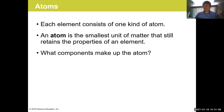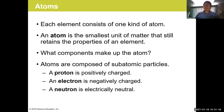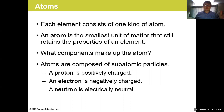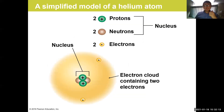Each element consists of one kind of atom, and you can't break that element down into a simpler form. The atom is the smallest unit of matter that still retains the properties of its associated element. Atoms are composed of three subatomic particles: protons, electrons, and neutrons. Protons and neutrons have mass; electrons have essentially zero mass. The atomic mass is determined by the number of protons and neutrons, while the charge is determined by the number of protons and electrons. Protons are positively charged, electrons are negatively charged, and neutrons have a neutral charge.